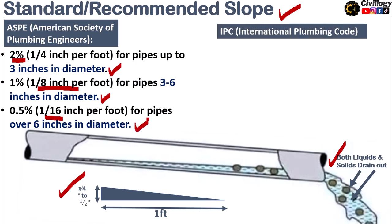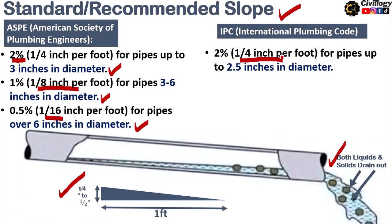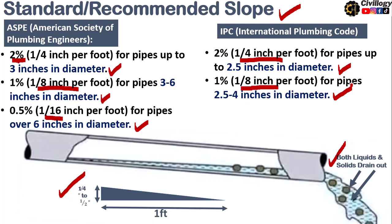There is another society or you can say IPC code, International Plumbing Code. It recommends 2% slope that is 1/4 inch per foot for pipes up to 2.5 inches in diameter. Or 1% you can say 1/8 inch per foot for pipes 2.5 to 4 inches in diameter. And 0.5% slope you can say 1/16 inch per foot for pipes over 4 inches in diameter.